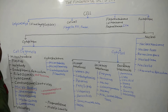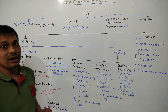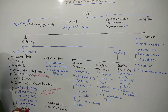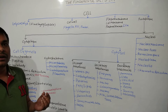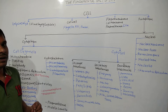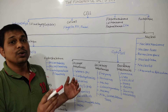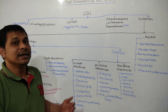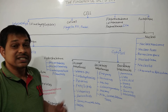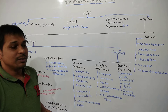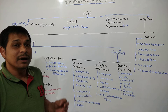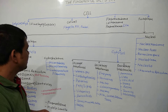Lysosomes are also known as the suicidal bag of the cell. Next are centrosomes or centrioles. Microbodies are minute spherical enzyme-filled structures, such as spherosomes, peroxisomes, glyoxysomes, and lomasomes. Vacuole is known as the storage house of the cell. In animal cells, vacuoles are temporary structures scattered throughout the protoplasm, but in mature plant cells, a vacuole is single, permanent, and centrally located.